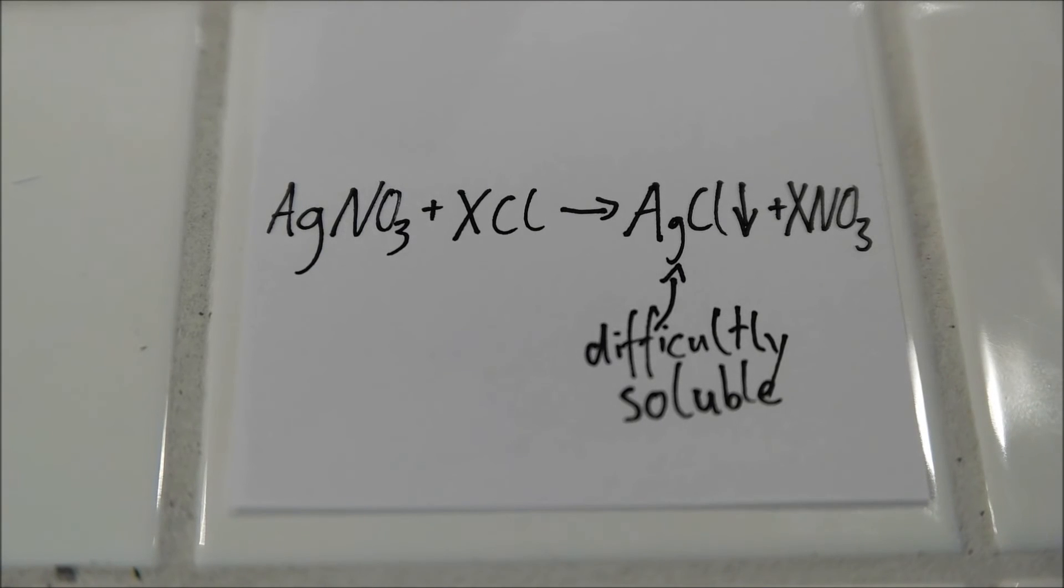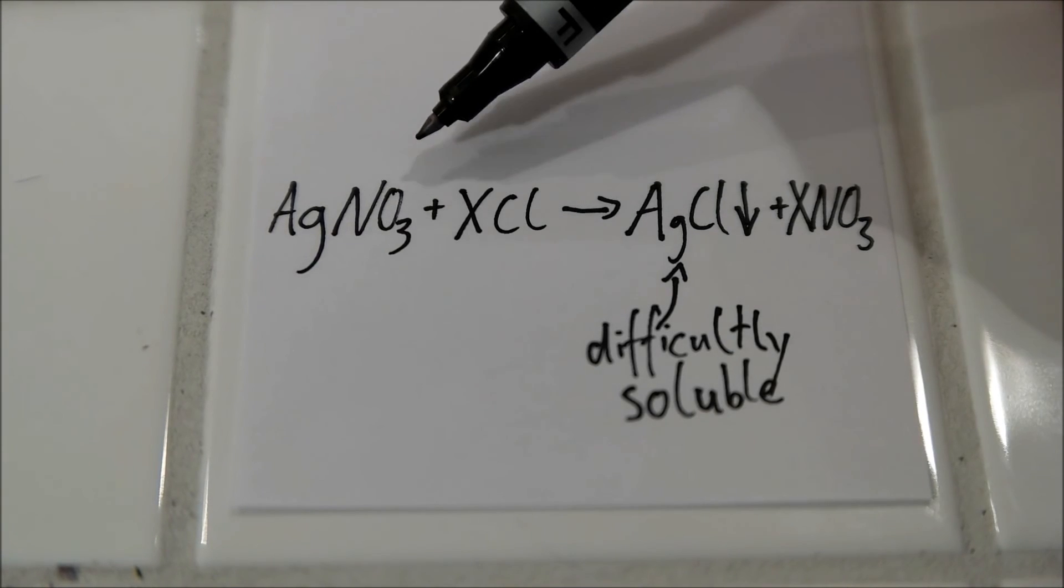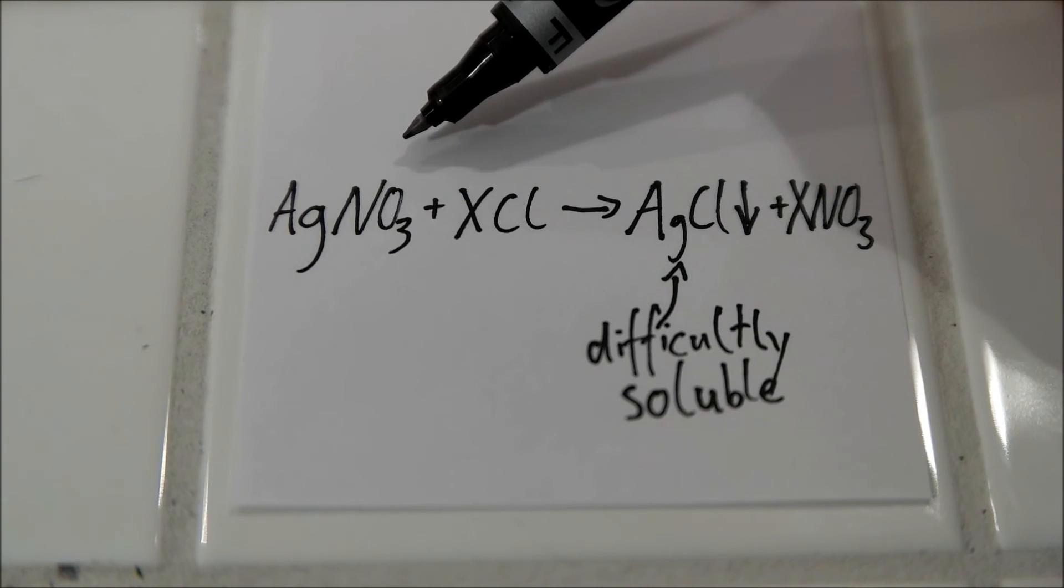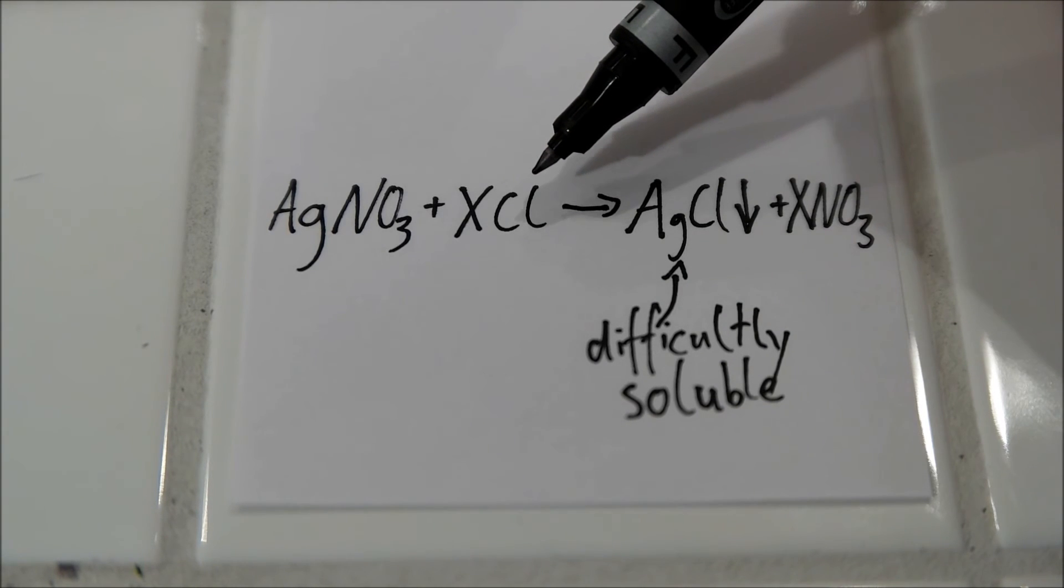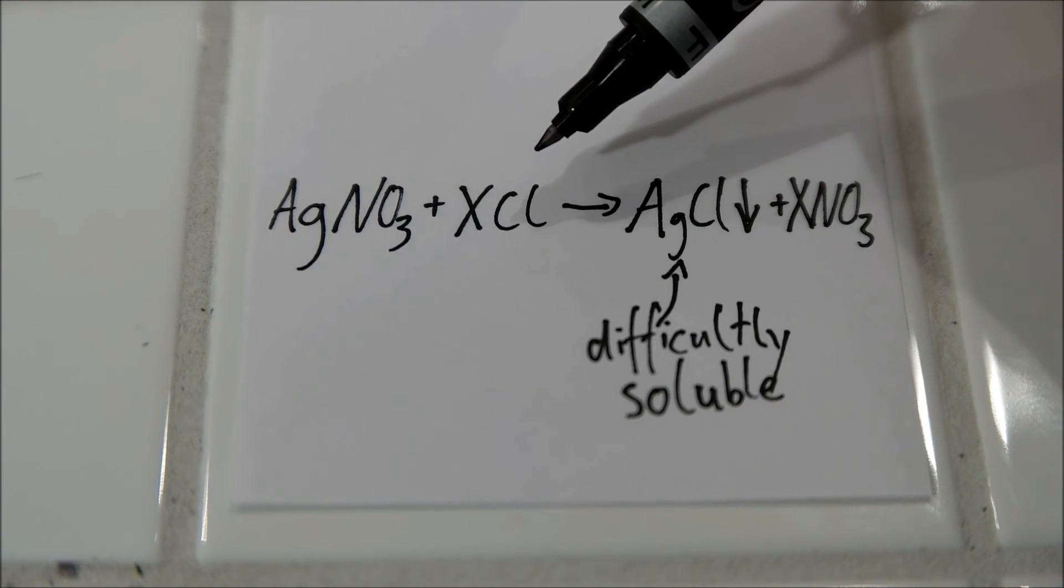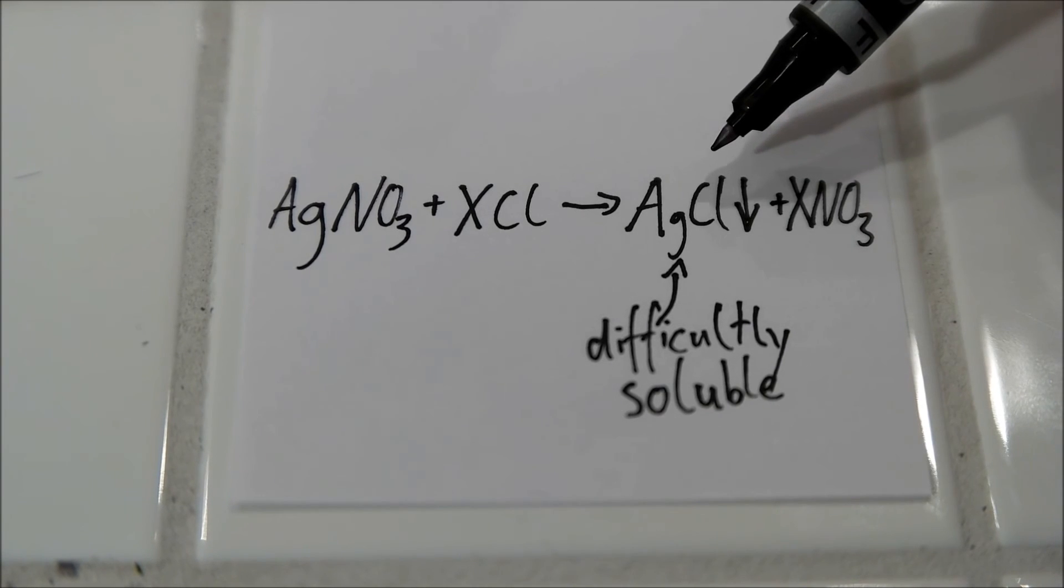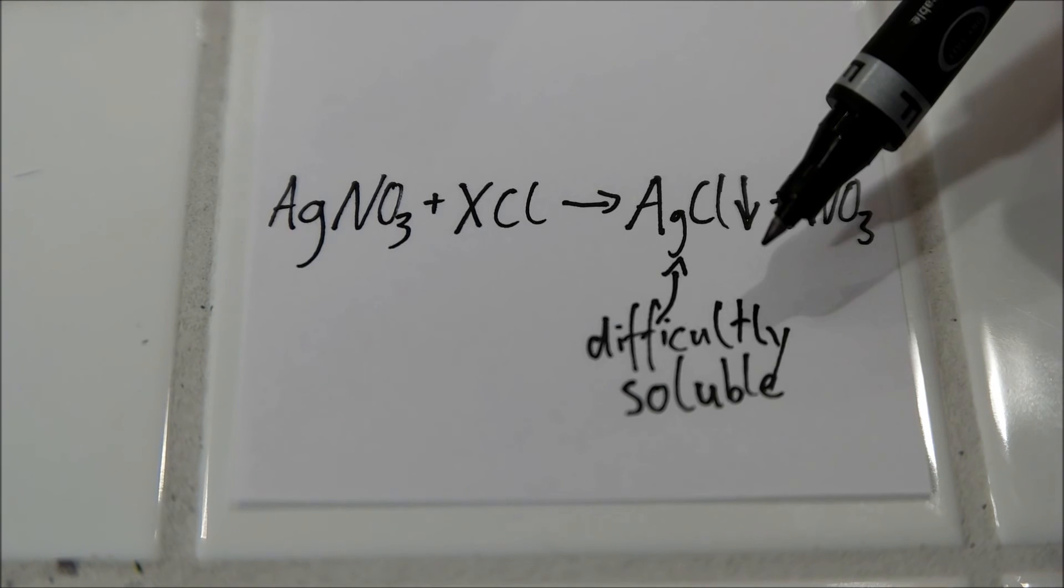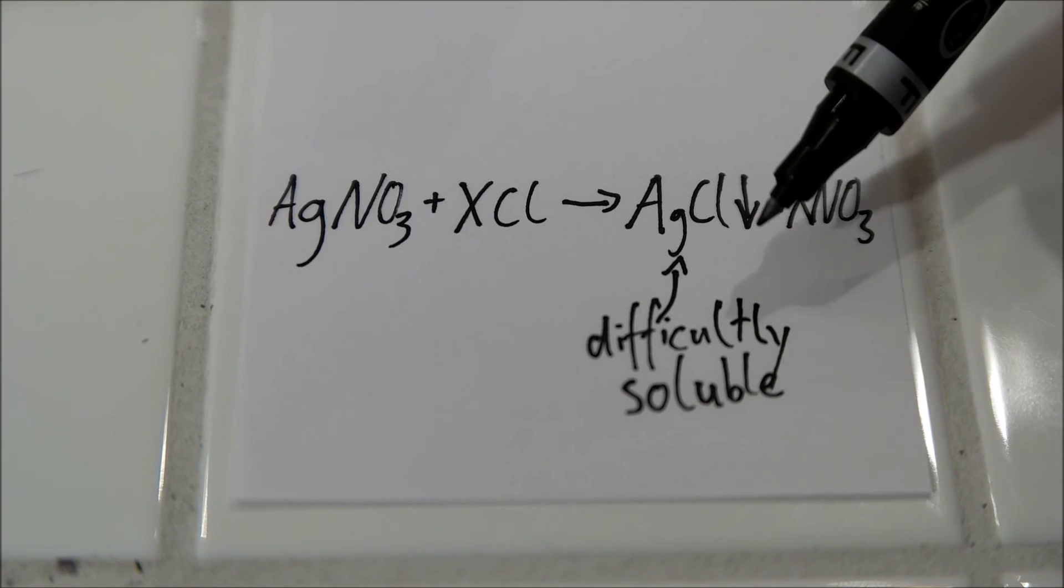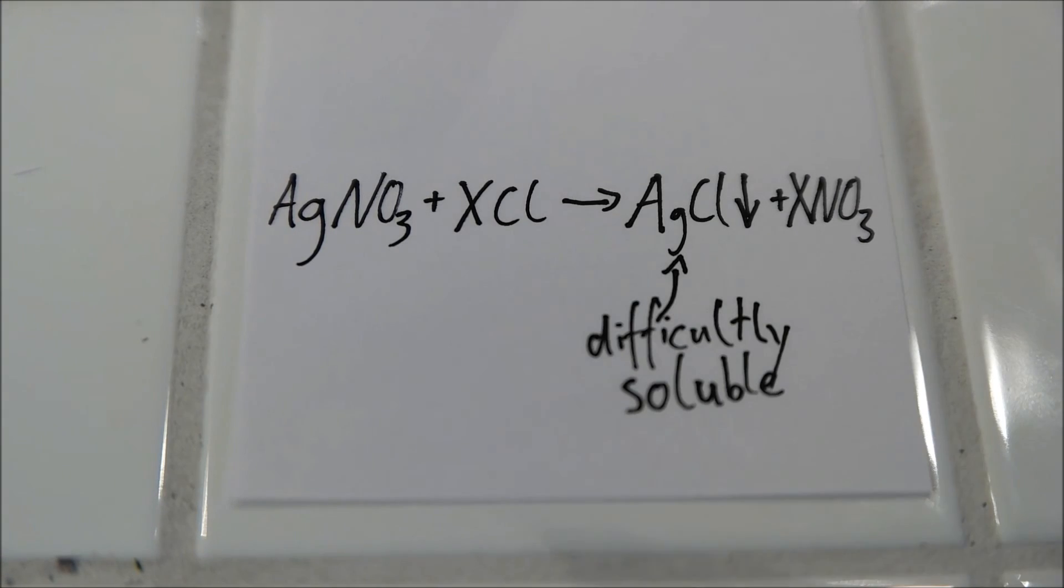This is what happens in the precipitation reaction we just did. Silver nitrate reacts with a chloride salt, or with chloride ions, and makes silver chloride, which is difficultly soluble, and that's this white precipitation as you can see in the test tubes.